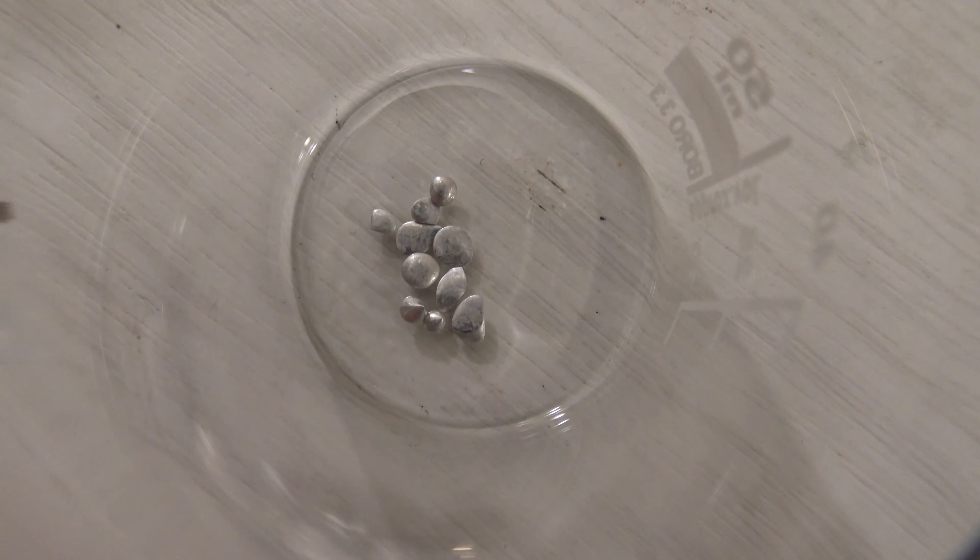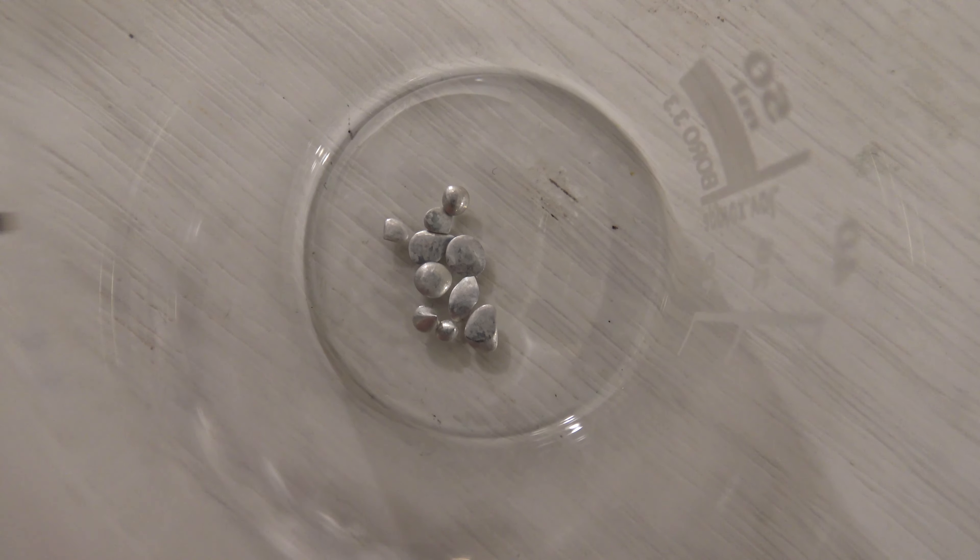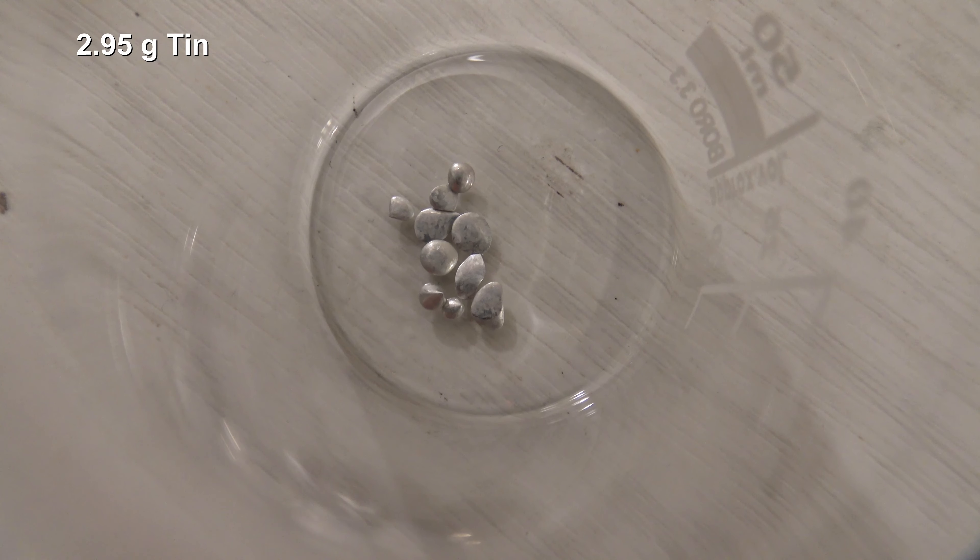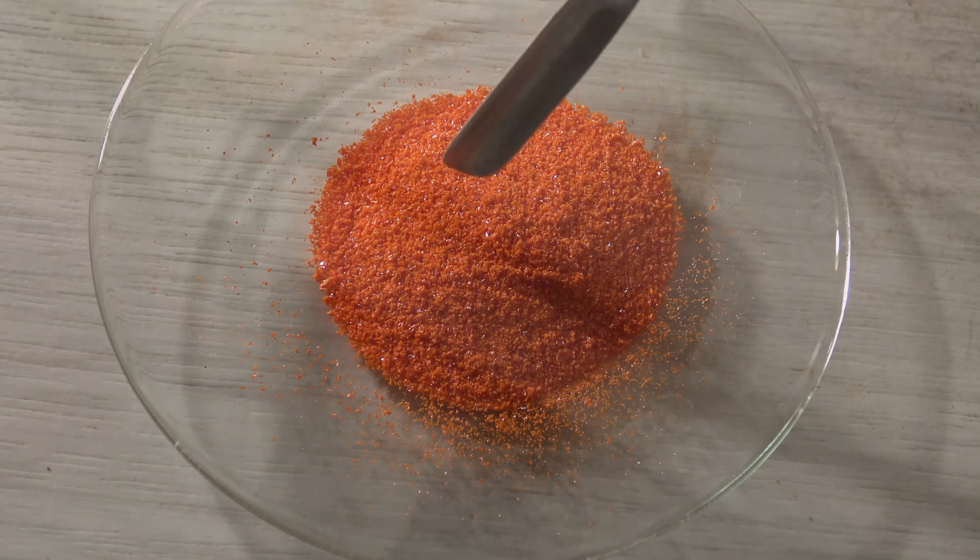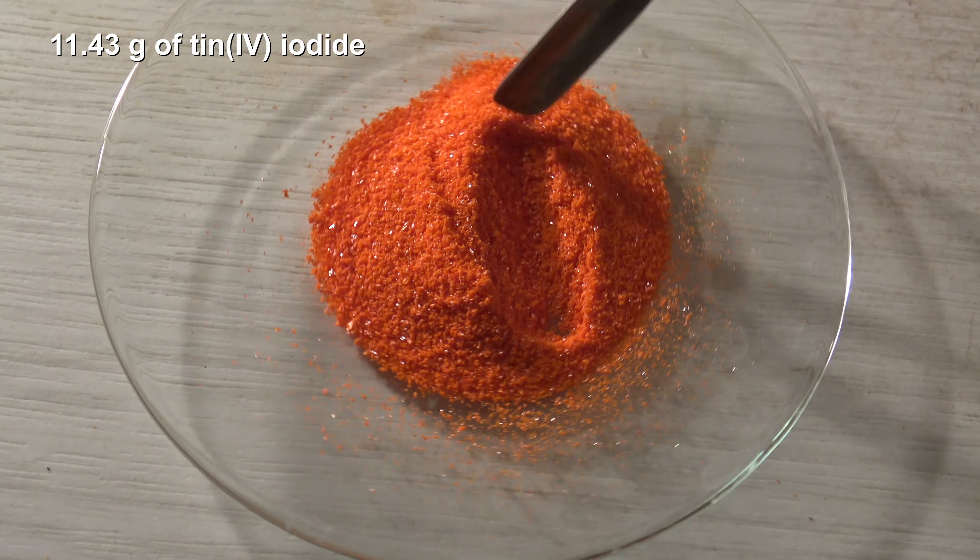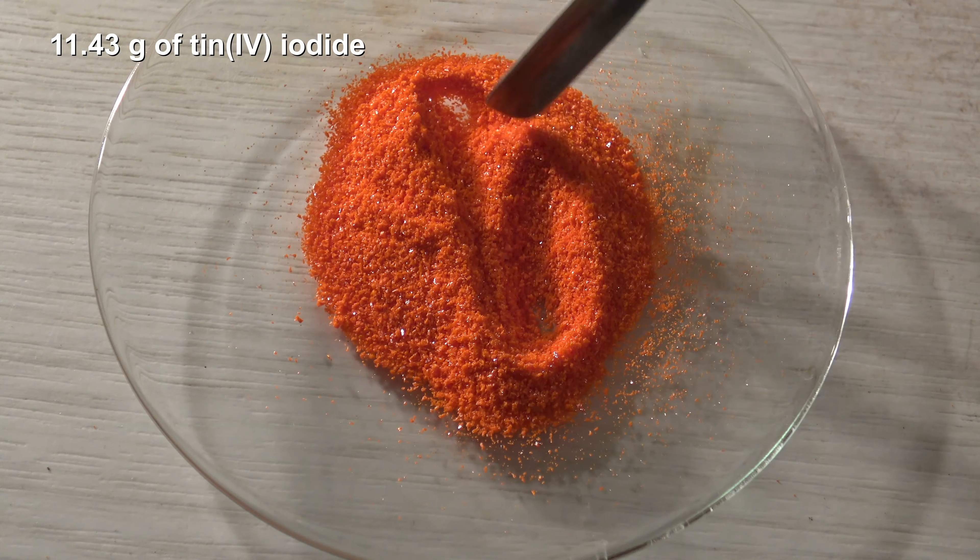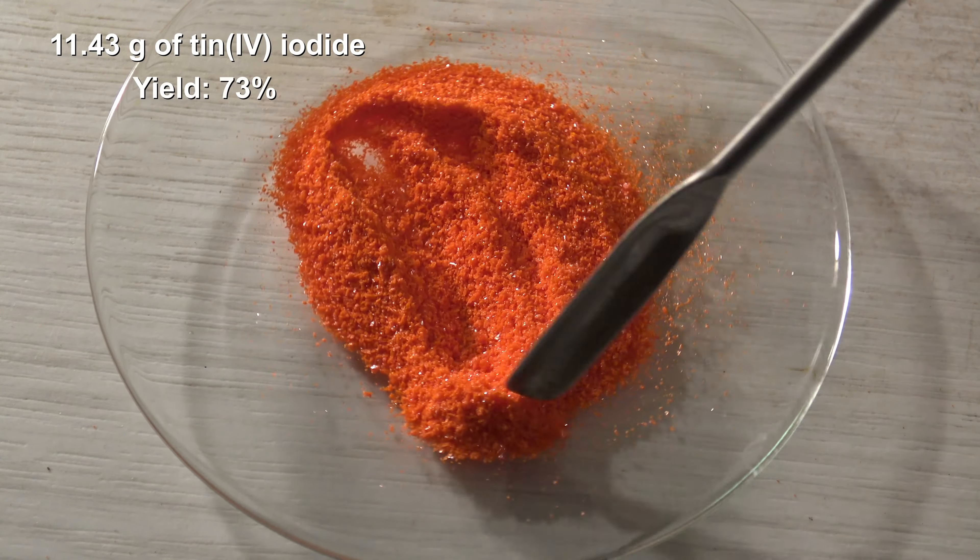To calculate the yield, the residual tin that had been removed after the reaction was weighed out. In total, 2.95 grams of tin had reacted. 11.43 grams of tin(IV) iodide were obtained, which corresponds to a yield of 73%.